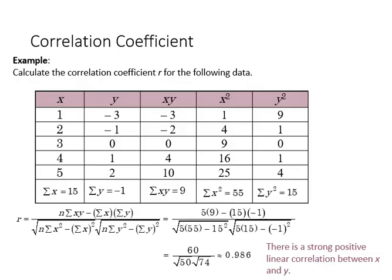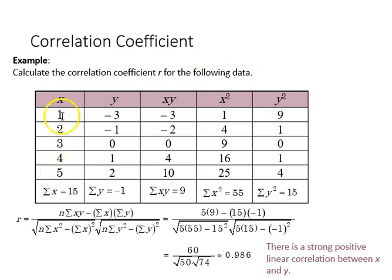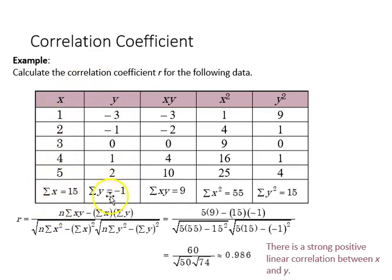Here's an example of some data where we calculate a correlation coefficient r. In this column we have our x values: 1, 2, 3, 4, 5. Over here we have our y values: minus 3, minus 1, 0, 1, and 2, and so we have the sum of those.